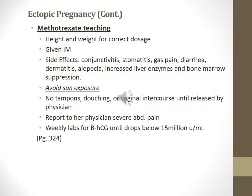Teaching the woman about methotrexate: obtain her height and weight for correct dosage. Give it IM. Side effects include conjunctivitis, stomatitis, gas pain, diarrhea, dermatitis, alopecia, increased liver enzymes, and bone marrow suppression. She should avoid sun exposure. No tampons, douching, or vaginal intercourse until released by her physician. Report severe abdominal pain or bleeding to her physician. Weekly labs for beta-hCG levels until they drop below 15 mIU/mL. This information is in your text on page 324.